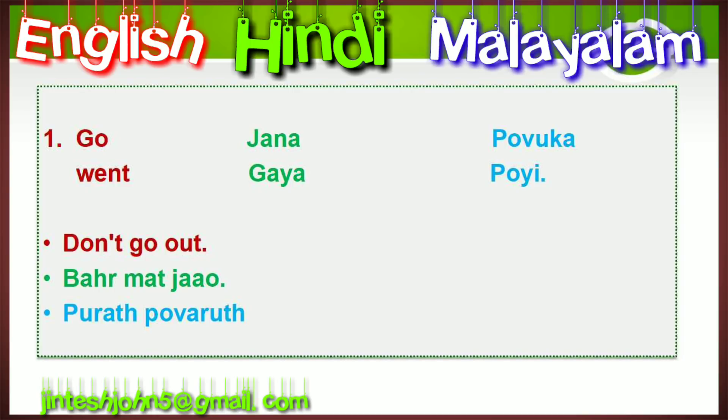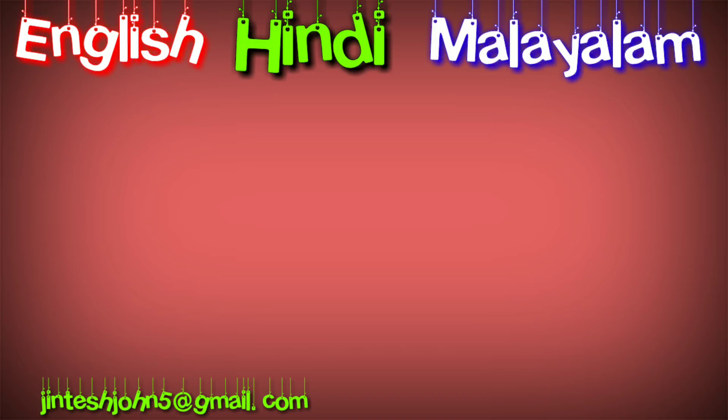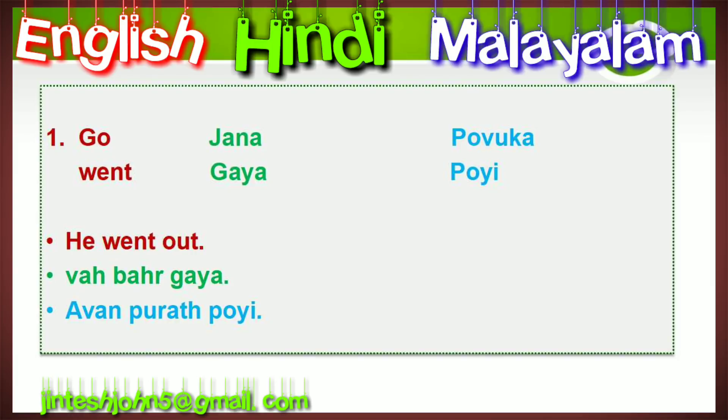The first verb is 'go.' In Hindi: jana. In Malayalam: povuga. The second form 'went' is gaya in Hindi and poi in Malayalam. Look at the example: 'Don't go out.' In Hindi: bahar mat javo. In Malayalam: purath povarudu.